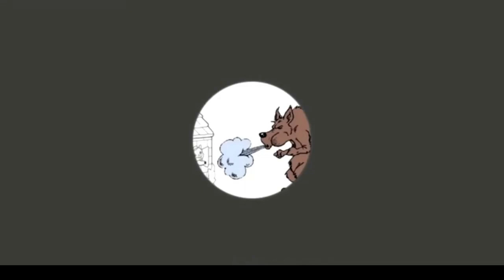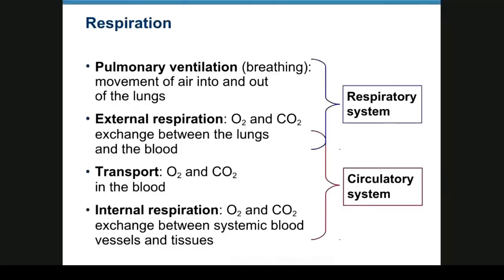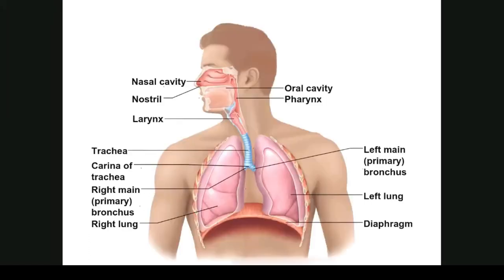We're going to talk about the respiratory system. Respiration involves both the respiratory system and the circulatory system for transport of gases. Pulmonary ventilation, also known as breathing, is just movement of air in and out of the lungs. External respiration is exchange of oxygen and CO2 between the lungs and the blood. Transport of oxygen and CO2 are actually the duties of the circulatory system, as is internal respiration, which is exchange of oxygen and CO2 between systemic blood and the tissues.